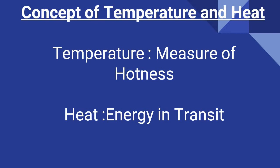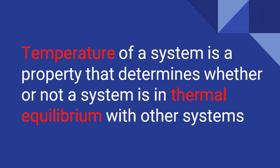Now we are trying to define temperature based on thermodynamic properties. Temperature of a system is a property that determines whether or not a system is in thermal equilibrium with other systems. If A and B are in thermal equilibrium, then definitely A and B are at the same temperature — that is a basic definition of thermal equilibrium. There is no temperature difference. If A and B are not in thermal equilibrium, that means there is a temperature difference between them.